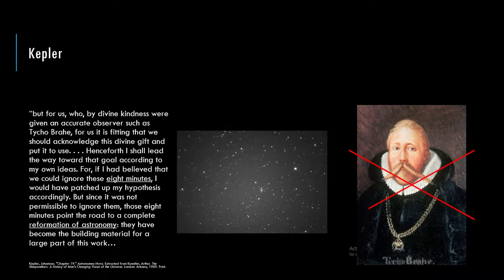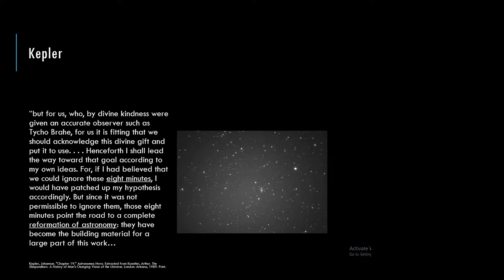Brahe dies — 40 years of observation, and Brahe dies. There's some controversy: some say it was a burst bladder from a dinner party, others say self-medication and accidental poisoning. Another theory — dun-dun-dun — is that Kepler poisoned him. There are interesting notes: after Brahe's death, Kepler took Brahe's notebooks and fled.